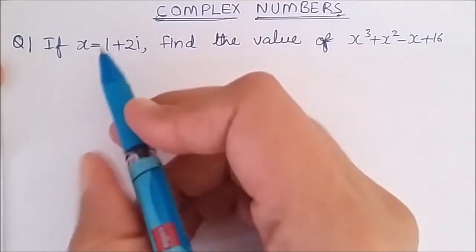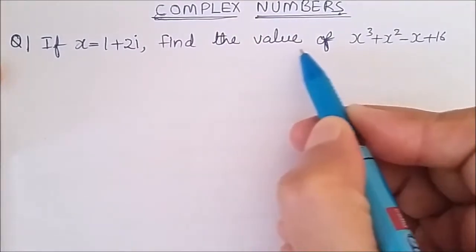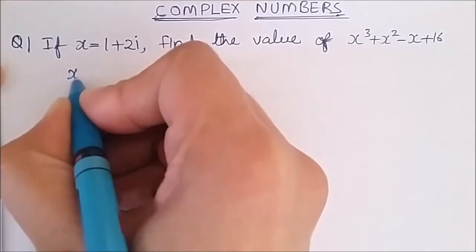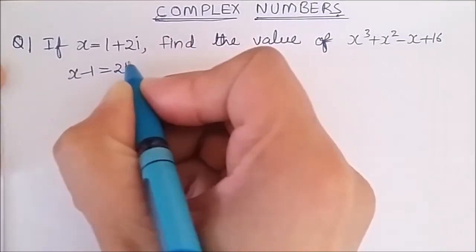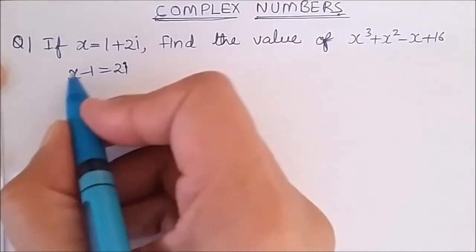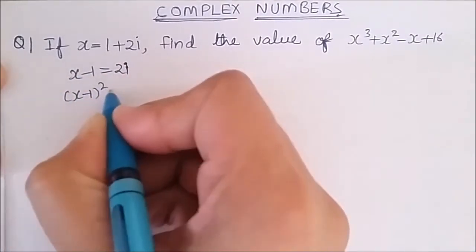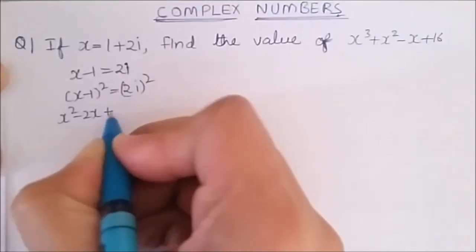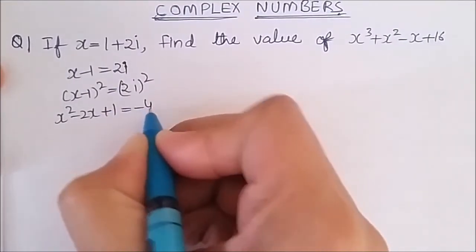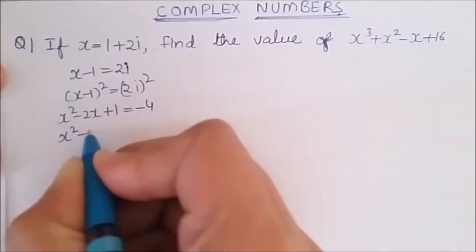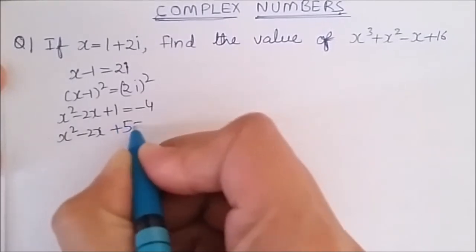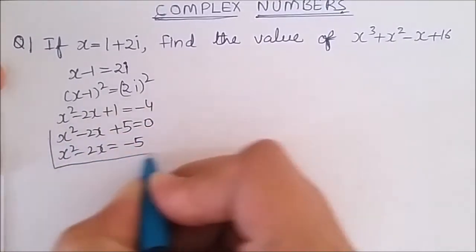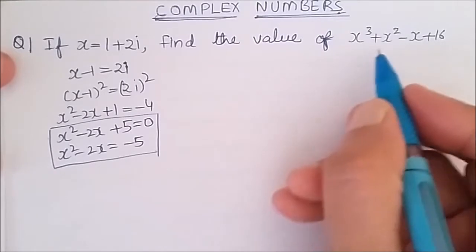In this question we have x equals 1 plus 2 iota and we need to find the value of x cube plus x square minus x plus 16. We rearrange: x minus 1 equals 2 iota. Squaring both sides, x minus 1 whole square equals 2 iota whole square, which gives x square minus 2x plus 1 equals minus 4. Taking minus 4 to the left side, this becomes x square minus 2x plus 5 equals 0, or x square minus 2x equals minus 5.